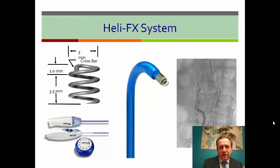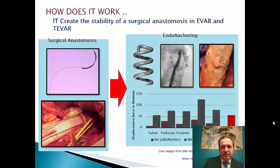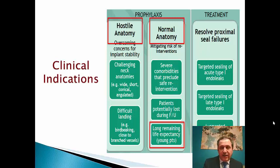The other option if you have a short neck is to use the Heli-FX system. It creates stability of the surgical anastomosis in EVAR and TEVAR, very similar to a suture line. It can be used prophylactically if you have a hostile neck — short or conical — or if you have normal anatomy but the patient is young and you need to give good fixation that will last for many years, or if the patient may be lost to follow-up and you want to give good fixation from the beginning.